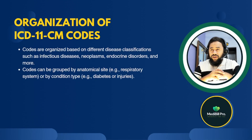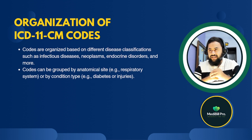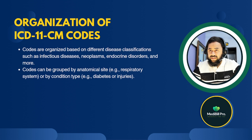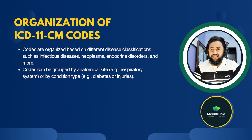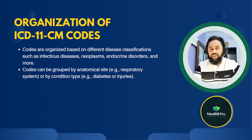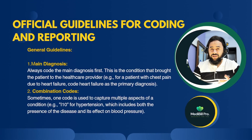Regarding the organization of ICD-11-CM codes: codes are organized based on different disease classifications such as infectious diseases, neoplasms, endocrine disorders, and more. Codes can also be grouped by anatomical site — for example, the respiratory system — or by condition type, such as diabetes or injuries. This is how the organization of ICD-11-CM codes is structured.